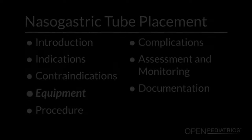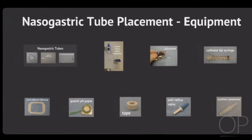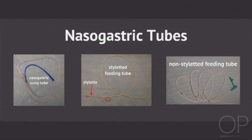Equipment. You will need the following equipment to perform the procedure. You may use one of three nasogastric tubes: a nasogastric sump tube shown on the left, a styleted feeding tube shown in the middle, and a non-styleted feeding tube shown on the right. Please note that a sump tube should only be used for aspiration and should not be used for feeding. Not all feeding tubes have a stylet — non-styleted feeding tubes are generally used for short-term or intermittent nasogastric feeds, and styleted tubes are used for longer-term placement.